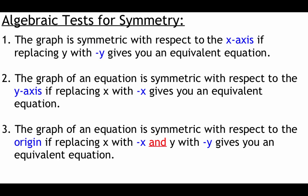When we talk about symmetry algebraically, there are three different tests, one for each type. For x-axis symmetry, replace y with -y and see if that yields an equivalent equation. For y-axis symmetry, replace x with -x and check if we get an equivalent equation. For origin symmetry, replace both x and y with their opposites — negative x and negative y — and see if that gives us the same equation we started with.